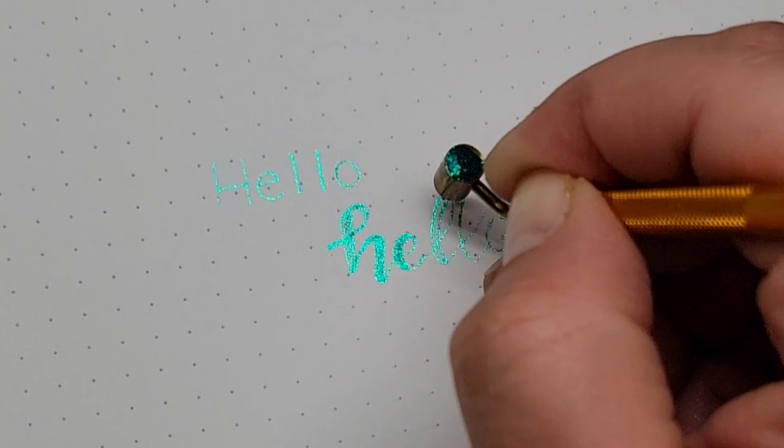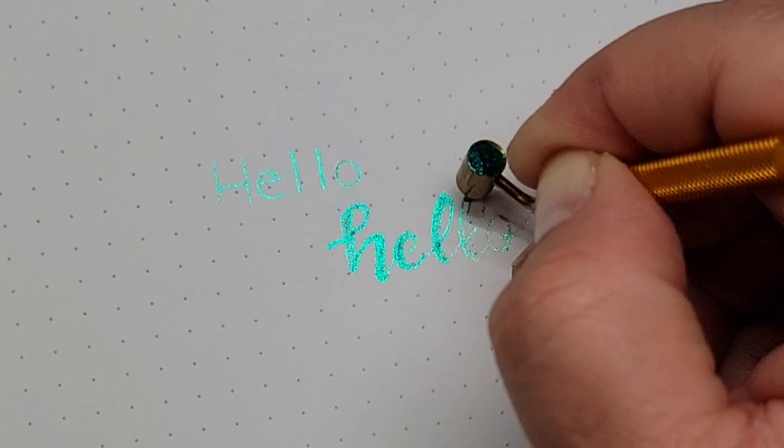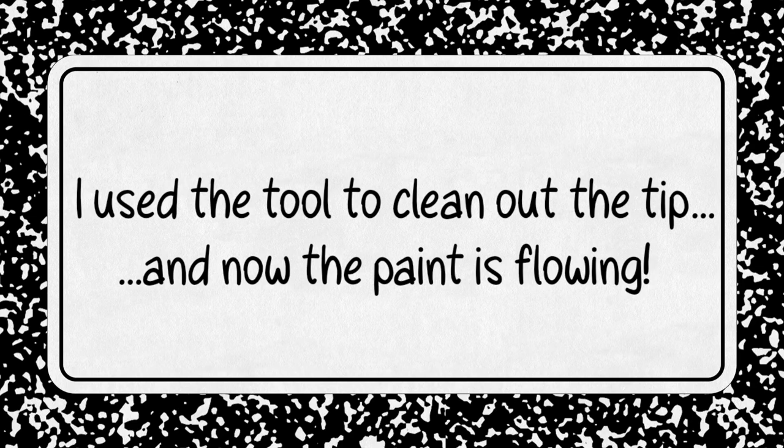The paint was still coming out and it was still pretty but it just felt like it wasn't coming out with the same flow that I had witnessed when I first saw this on Instagram. So I decided to try and use that cleaning tool and I actually was able to pull out a little chunk of paint and now the paint is flowing.